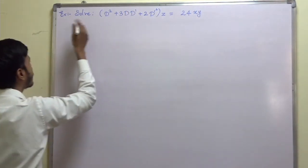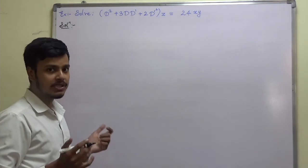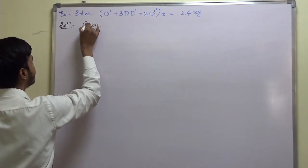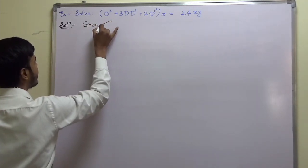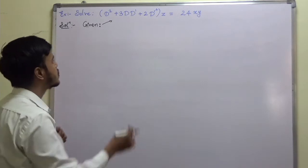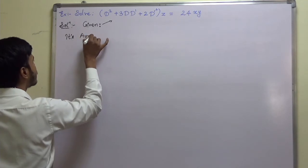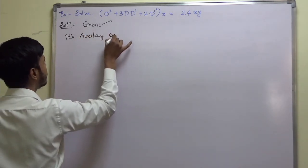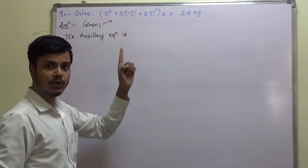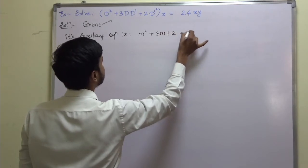First of all, this problem says 'solve', meaning we have to find out the complementary function as well as the particular integral. So let us start with the given. After writing the given, write down its auxiliary equation. The auxiliary equation can be obtained by putting D equal to m and D-dash equal to 1, so it is m-squared plus 3m plus 2 equal to 0.